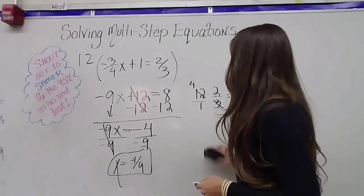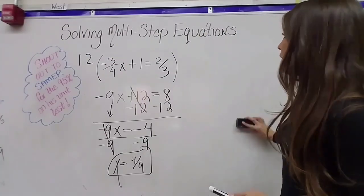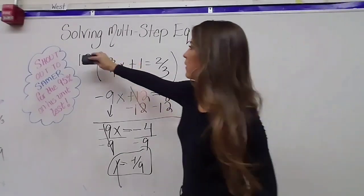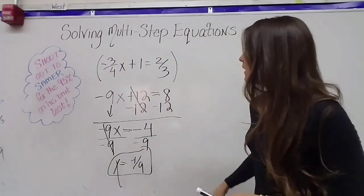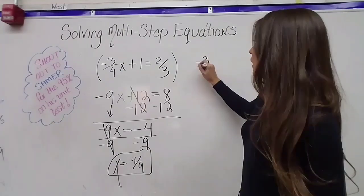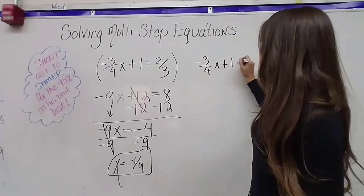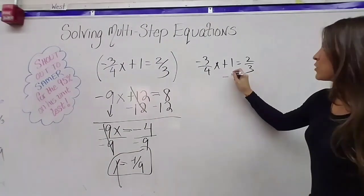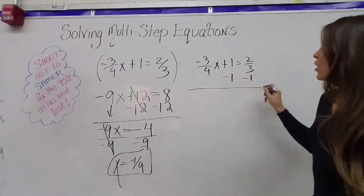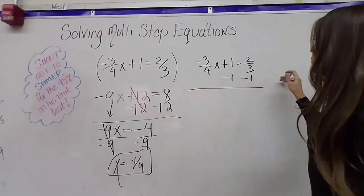Okay, so I'll do it the long way just so we can kind of go through the pain to appreciate the beauty of wiping out the fractions. So you see we do get the same answer. So if I didn't multiply by 12, then I guess my first step would be to subtract that one from both sides. So minus one, minus one.